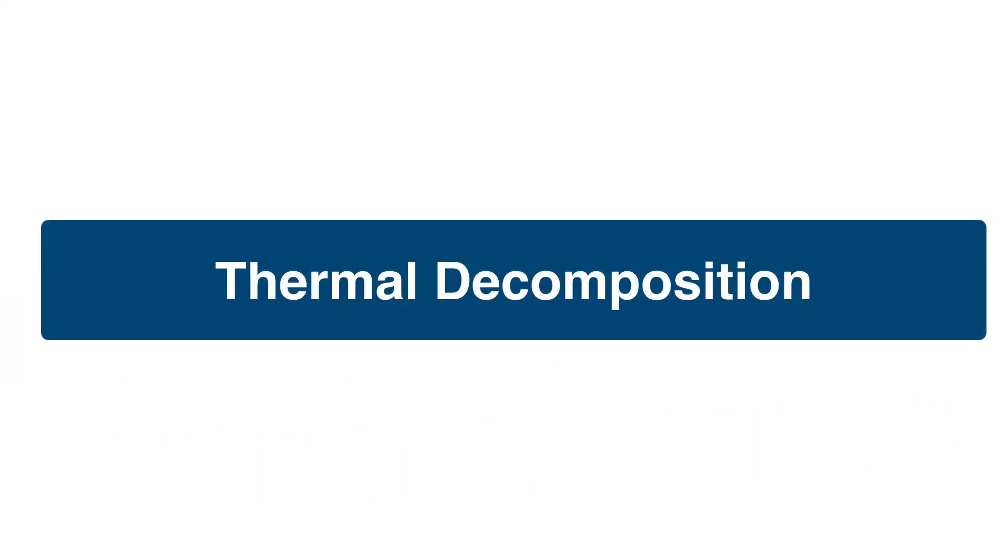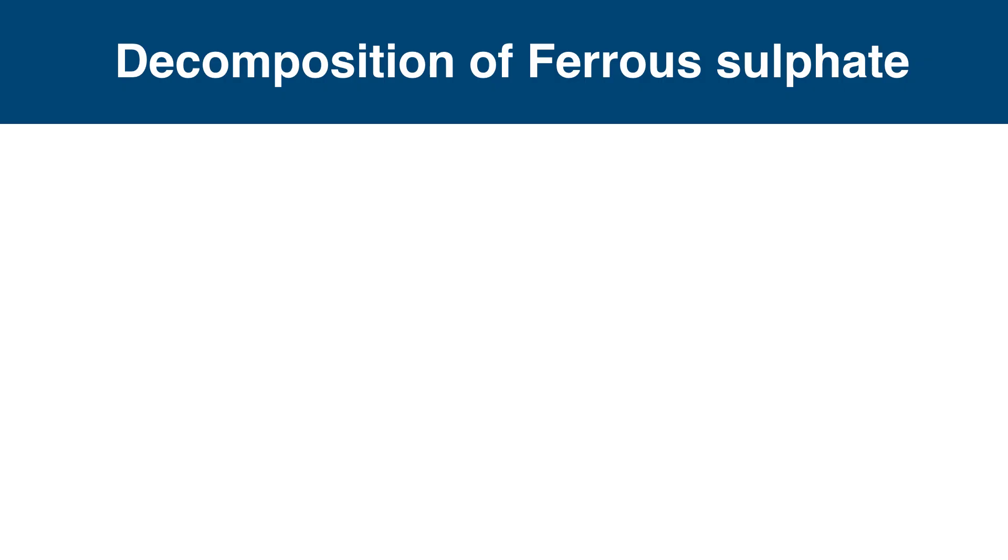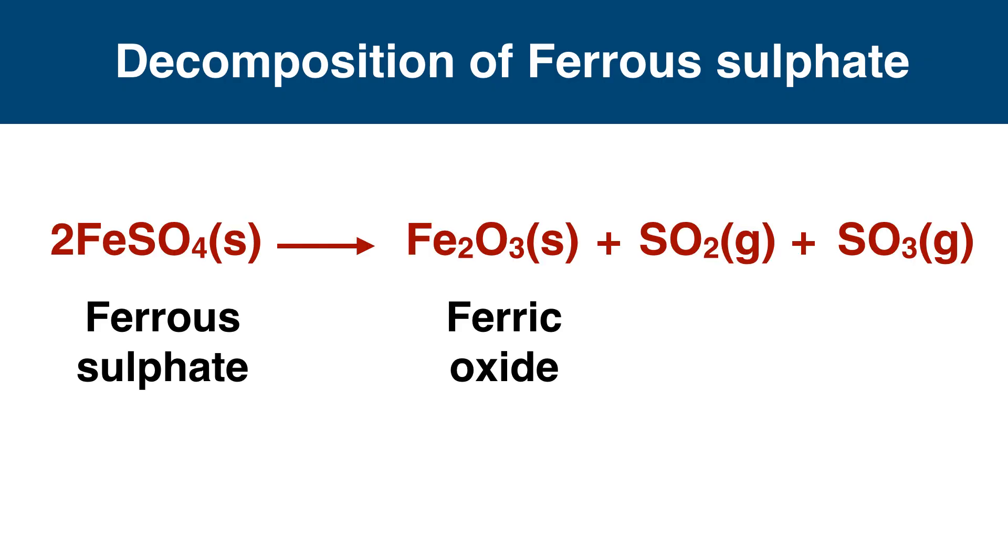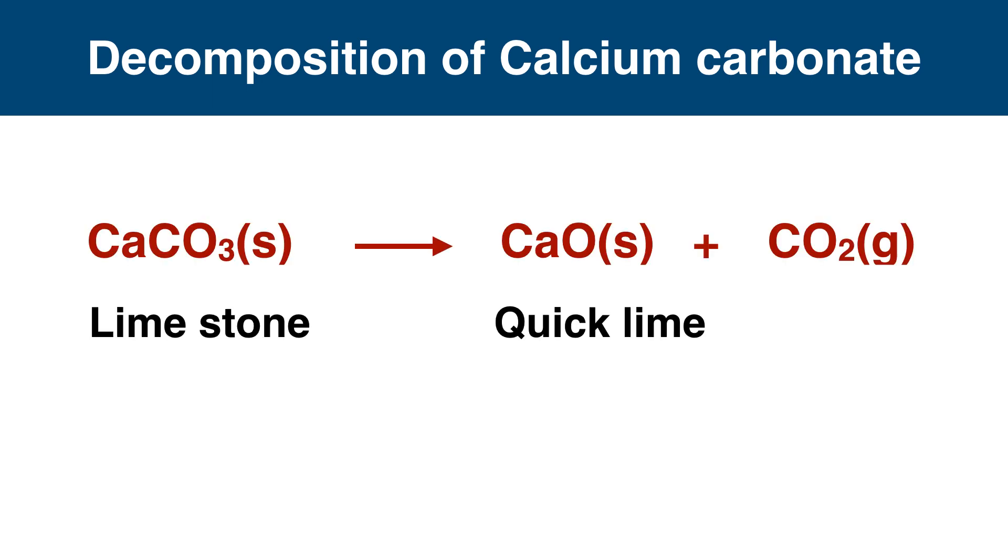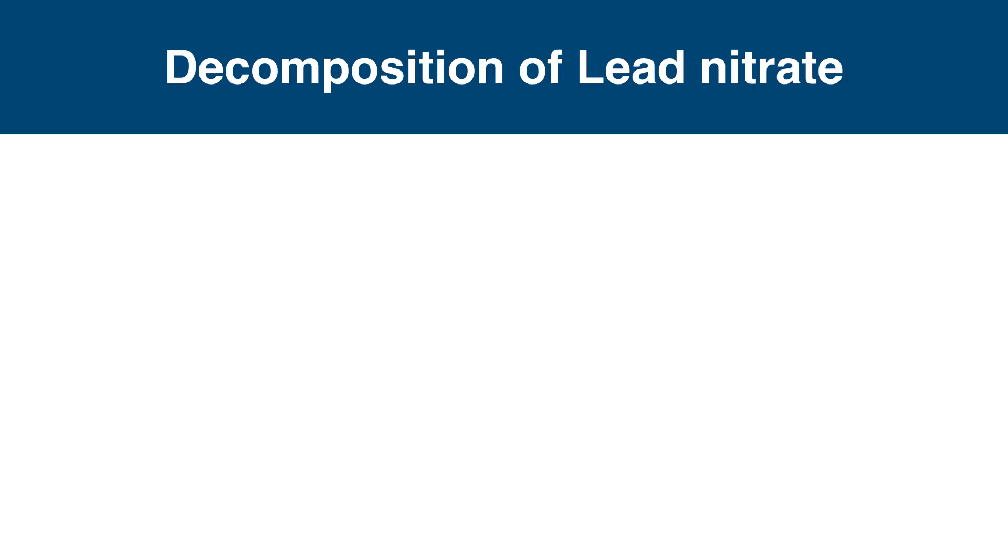When a reaction breaks down by heating, it is called thermal decomposition. Ferrous sulfate breaks down to form ferric oxide, sulfur dioxide gas, and sulfur trioxide gas. Like this, calcium carbonate decomposes into calcium oxide and carbon dioxide, and decomposition of lead nitrate produces lead oxide, nitrogen dioxide, and O2 gas.